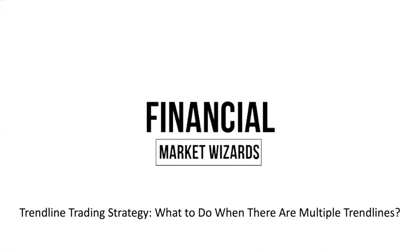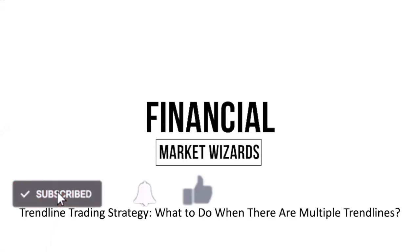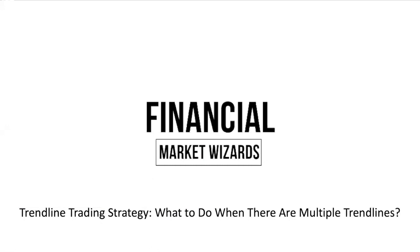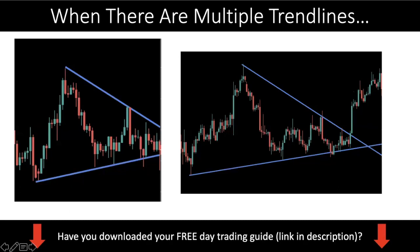If that's you, then today's video is for you, because in today's Forex trading video, I'll be talking about the trend line trading strategy. Specifically, I want to address the question of what do you do when there are multiple trend lines. For example, you have one trend line that is with the trend and the other trend line is counter trend. What do you do in this kind of scenario? To illustrate what I mean, I want to show you some examples of what this problem is first, just in case you are not too clear about what I'm saying.